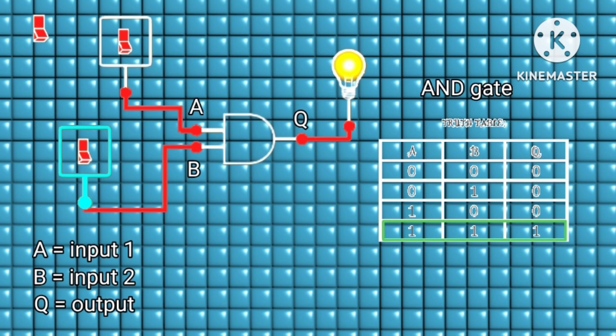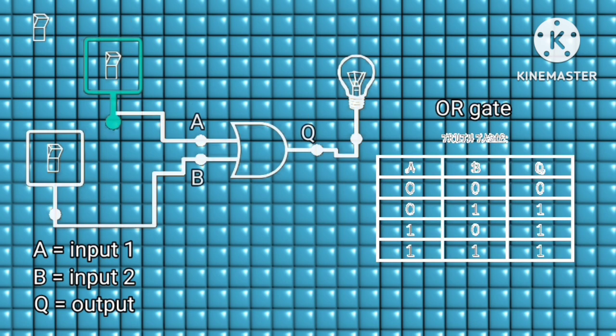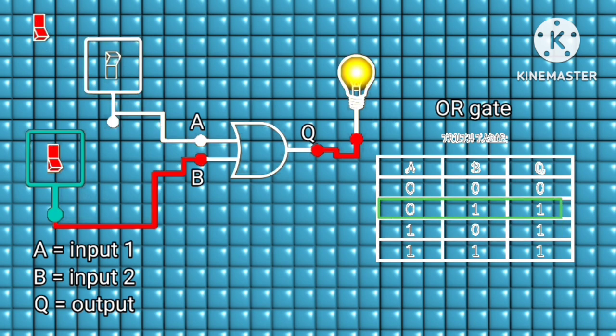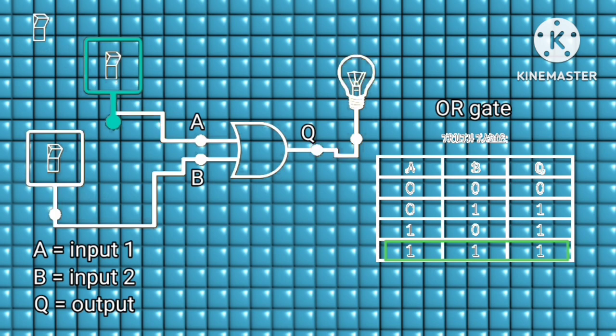The OR gate: this is also easy to remember. Just remember 'OR' as its keyword, which says 'otherwise.' The output of an OR gate is high if A or B or both inputs are high. Otherwise, if both inputs are low, the output will be low. And that's why it's called an OR gate.